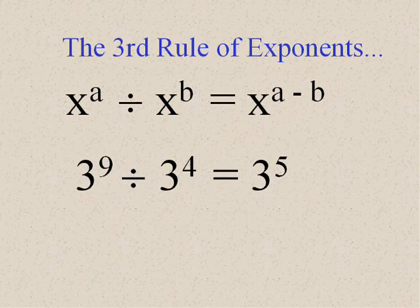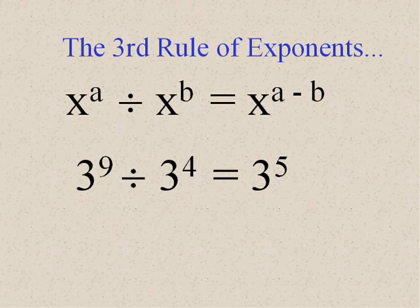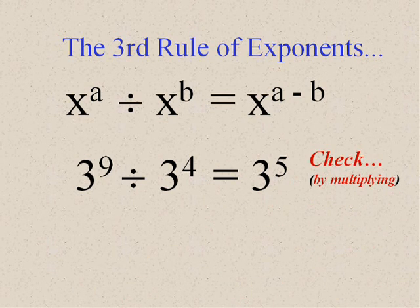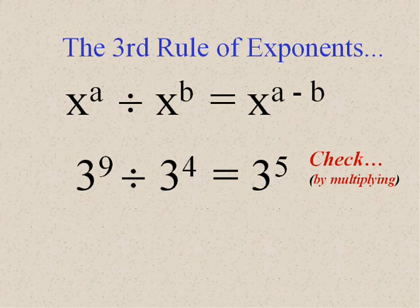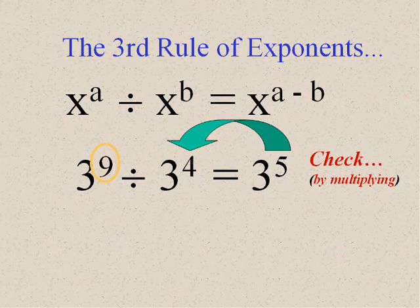Okay? For instance, three to the ninth divided by three to the fourth is three to the fifth. Now, you can check that by multiplying backward because three to the fifth times three to the fourth, it does work, doesn't it? So, you don't have to memorize this rule, just always check it.